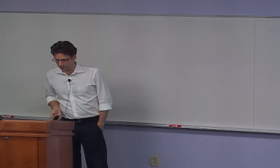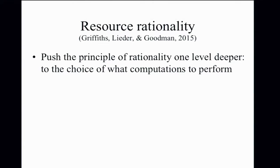My colleagues and I have been working on a way to reconcile this — a strategy combining the strengths of these two approaches, developed with Falk Lieder and others including Noah Goodman at Stanford. The framework says we can push the principle of rationality one level deeper: rather than thinking about the actions agents take in the world, we think about the computational actions agents could perform to choose those world-level actions.